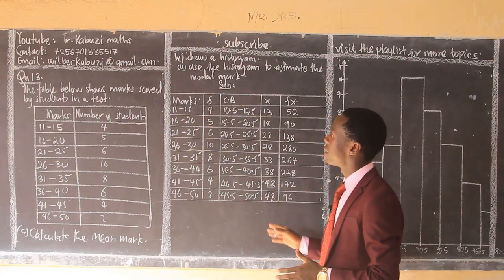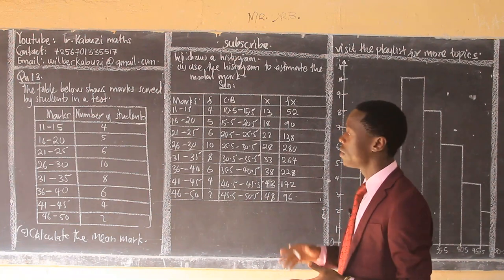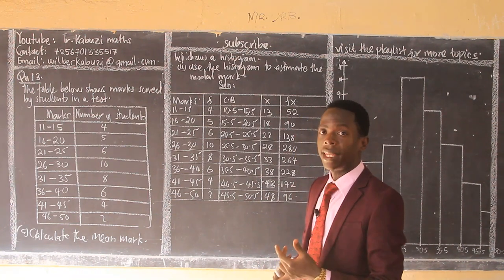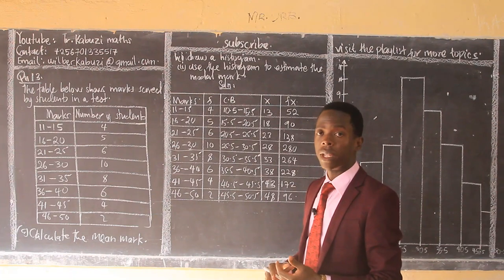Now, we have to start by drawing a table because we already used the table to do a histogram. To do a histogram, we need two things: the upper class boundaries and also the frequency.